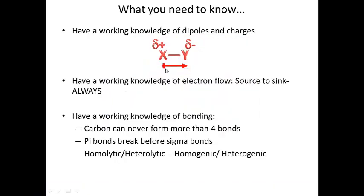The dipole arrow is pointed towards Y because Y is partially negative. You also need to have a working knowledge of electron flow — electrons always flow from source to sink, never the other way around. And you need a working knowledge of bonding, meaning knowing that carbon can never form more than four bonds, and that pi bonds break before sigma bonds because pi bonds are weaker.